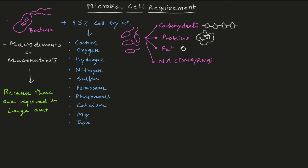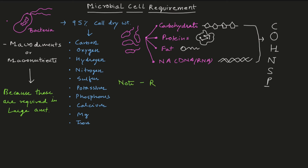This is very important to remember: for carbohydrates, proteins, fats, and nucleic acids, the associated macro elements are C, O, H, N, S, and P — that is carbon, oxygen, hydrogen, nitrogen, sulfur, and phosphorus. The other remaining macronutrients shown in blue are the ionic ones.